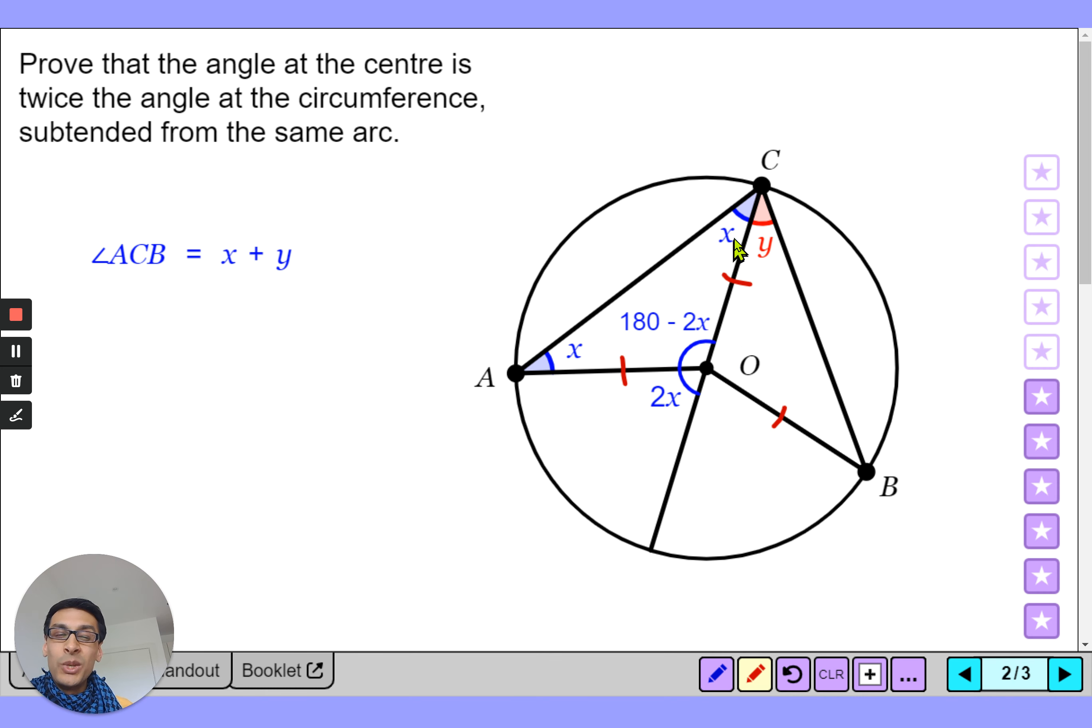So we can call that 2x and we can actually do the same thing with the other triangle. We can say well this is y, well then that must mean that this angle here is going to be 180 minus 2y. Now because of angles on a straight line we can say that this angle there is going to be 180 minus 2y plus, well that has to be 2y.